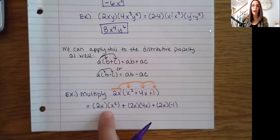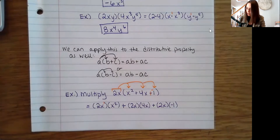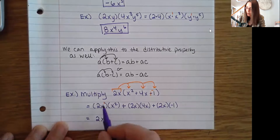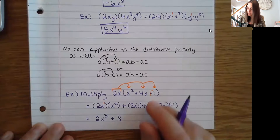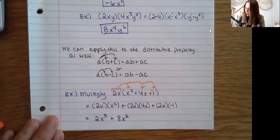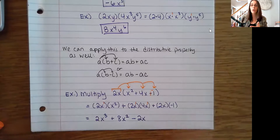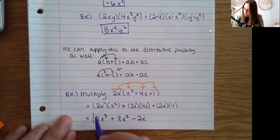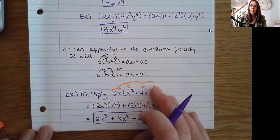Now we use the product rule to finish our multiplication. Here I just have 2 for my number, and x to the first power times x squared is x to the third power, since 1 plus 2 is 3. Then 4 times 2 is 8, and adding the x exponents: 1 plus 1 is 2, so I have 8x squared. And negative 1 times 2 is negative 2, then I just have the x. Give it a quick check — these are all unlike terms, so I cannot add or subtract them, and we have to stop here.